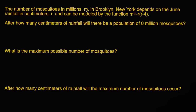The number of mosquitoes in millions, m, is the number of mosquitoes in millions in Brooklyn, New York. It depends on the June rainfall in centimeters, r. So r is the amount of rainfall measured in centimeters, and it can be modeled by the function m equal to negative r times r minus 4, where r is the rainfall in centimeters in June.